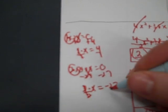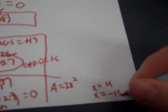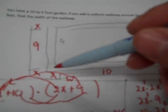The second solution: 2x + 27 = 0 gives x = −27/2 = −13.5. Since the positive answer is 4, the walkway width is 4 feet — so all the x values around the garden equal 4. This satisfies the area of 306 square feet.